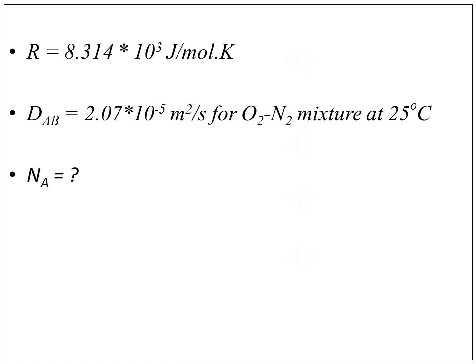We need to calculate the flux of diffusion of oxygen, represented as NA, for the case where nitrogen is non-diffusing. Therefore, NB equals zero.